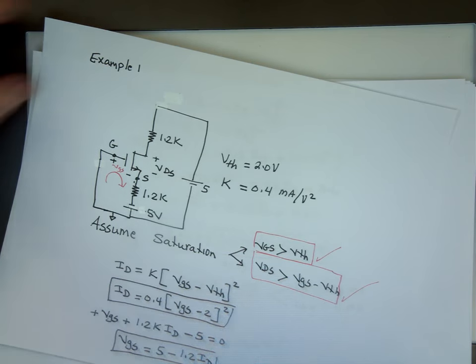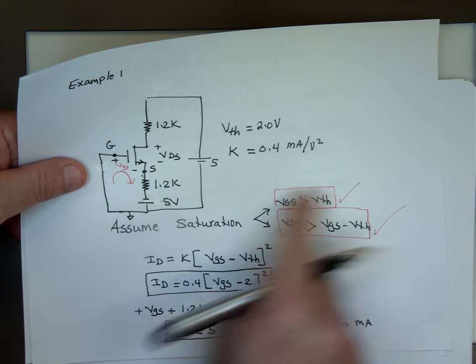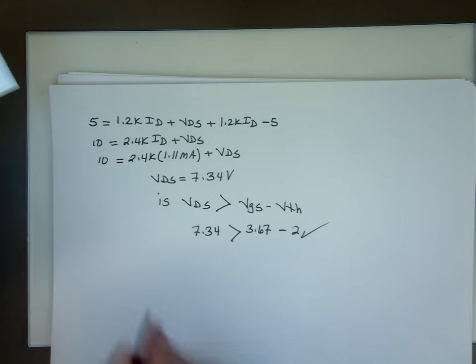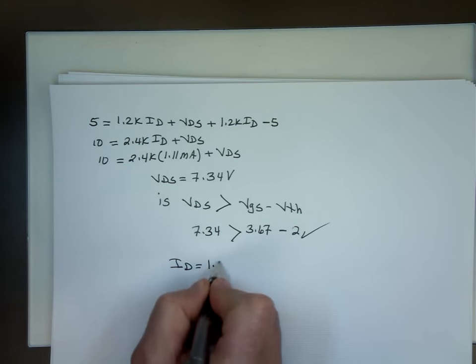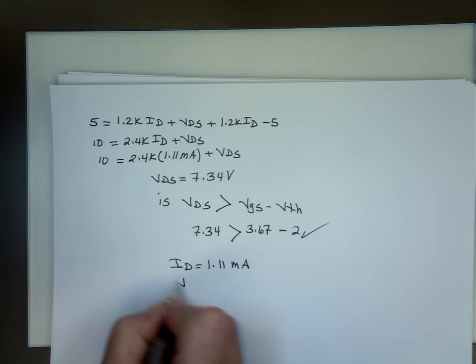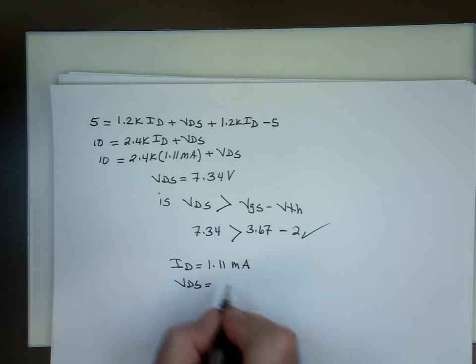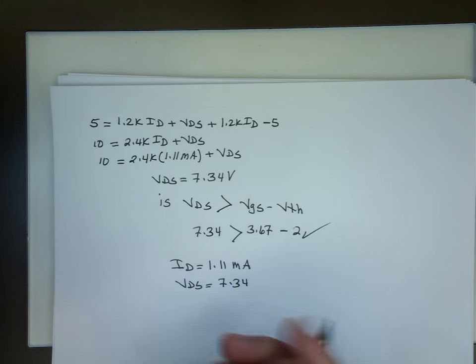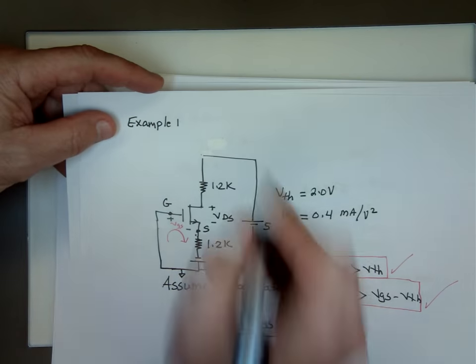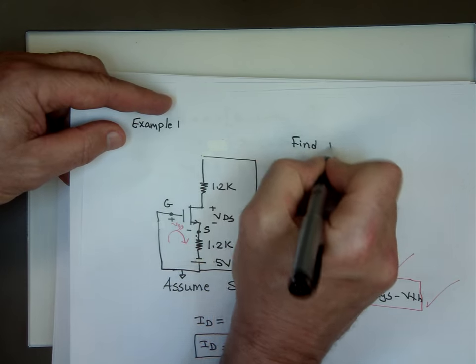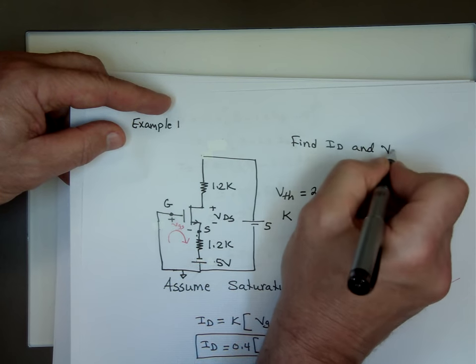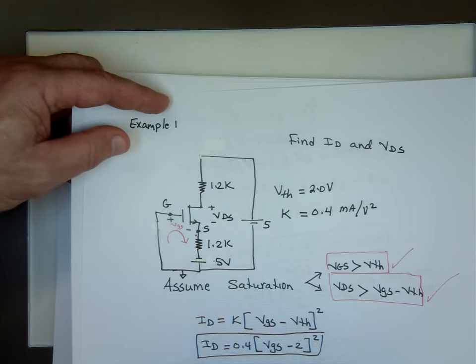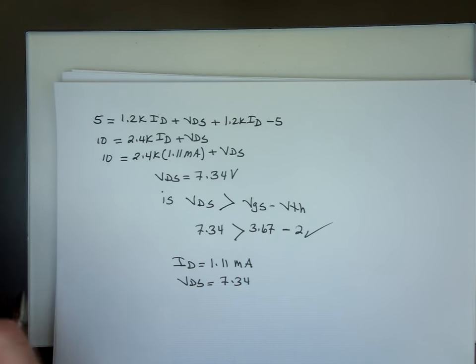So, we made an assumption. We said we're going to be in saturation. Based on that, we verified that these two conditions are true. We solved the problem. And we found I sub D to be, what was it? 1.11 milliamp. And VDS equals, what was it? 7.34. And I forgot to write earlier because I got so excited. That was really the question. Find I sub D and VDS. But I was so excited about the problem, I forgot to write the question. So, we found both answers. And yes, our assumption is correct. So, correct assumption. I don't have to redo anything.